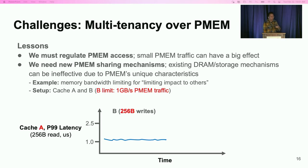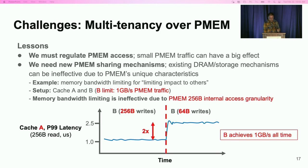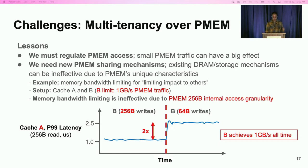In this figure, we plot cache A's tail latency over time, with B initially inserting popular 256-byte items and thus generating 256-byte PMEM writes. Then at some point, we change cache B to generate 64-byte PMEM writes. As shown, even though we effectively limit B's throughput at all times, the interference effect from cache B to A varies a lot when B's write size changes.